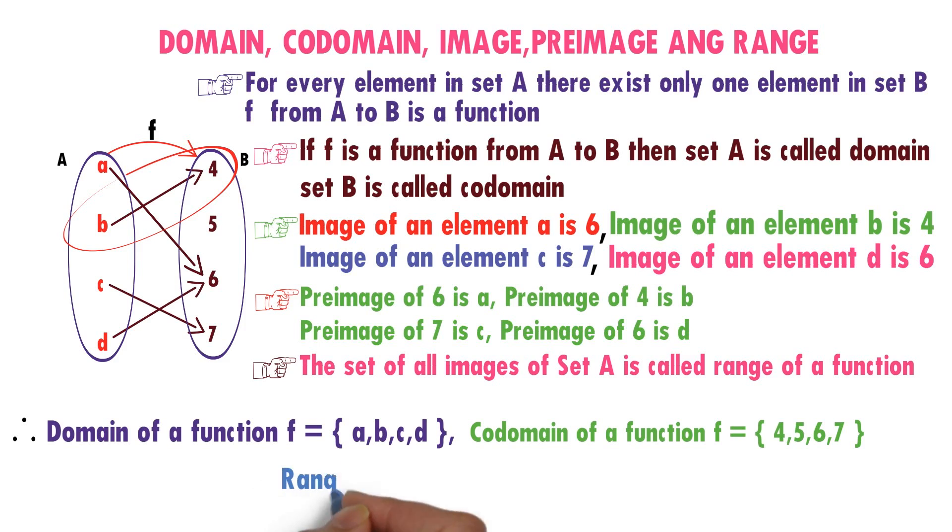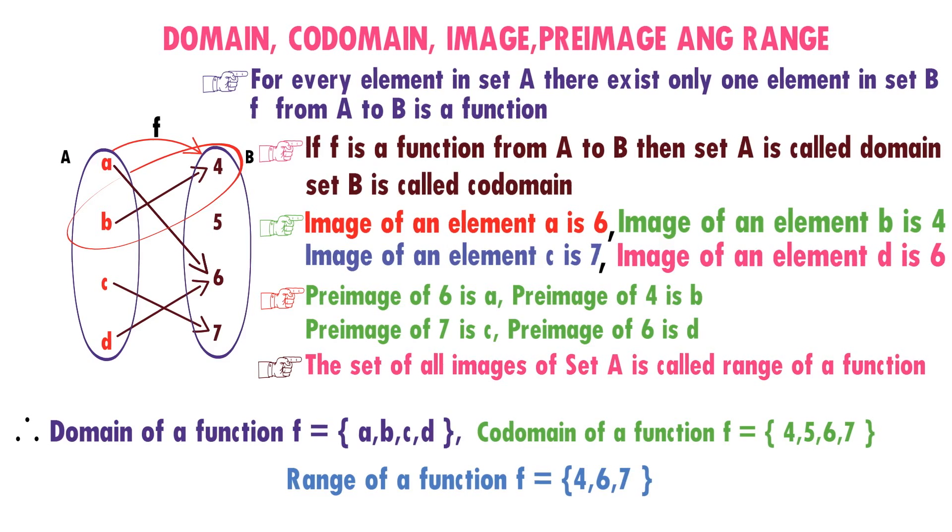Range. Range of the function is what? Set of all images. 4, 6, 7. In this, we don't get the element 5. 4, 6, 7 are the set of all images of set A.